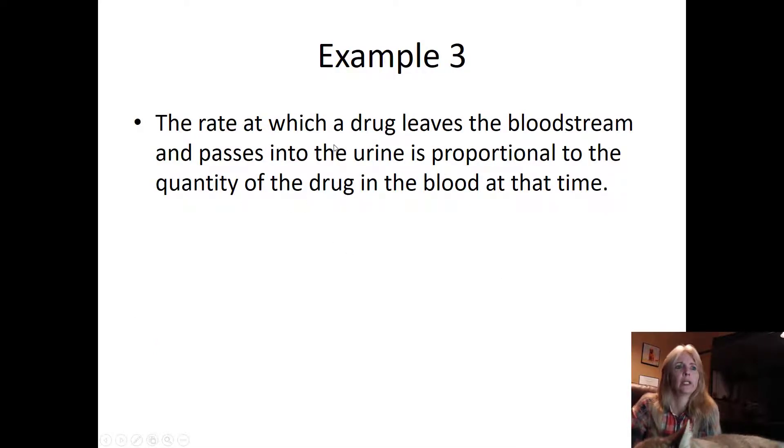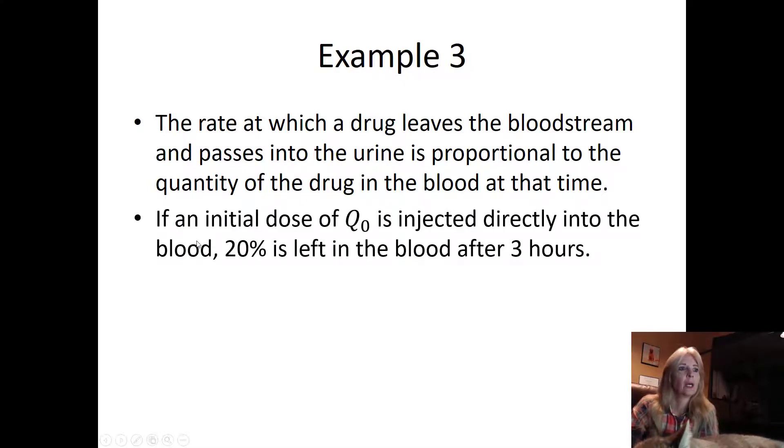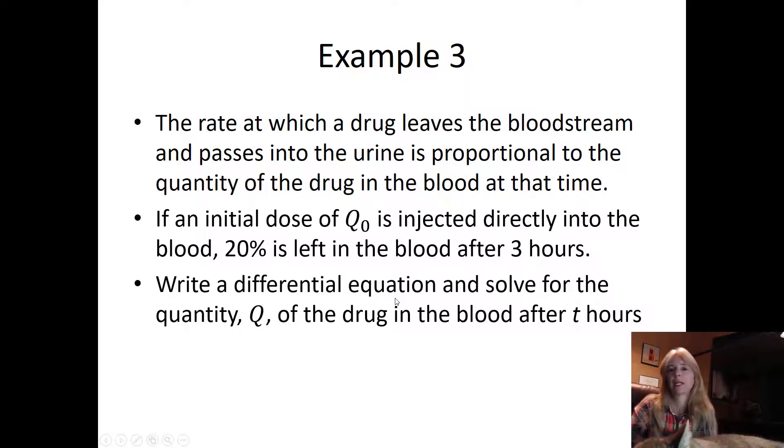The rate at which a drug leaves the bloodstream and passes into the urine is proportional to the quantity of drug in the blood at that time. All these examples are getting you set to know which differential equation you're going to set up with. An initial dose is injected directly into the blood; 20% is left in the blood after three hours. Write a differential equation and then solve for Q of the drug in the blood after t hours. I already know the format because I know it's proportional, so the format is going to look like Ce^(kt). I know the drug is leaving the bloodstream, so my constant of proportionality is going to be negative.